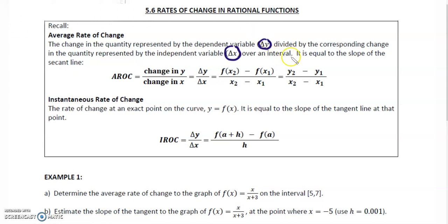It is equal to the slope of the secant line. A secant line goes through two points. So average rate of change is delta y over delta x, the change in f of x over the change in x.